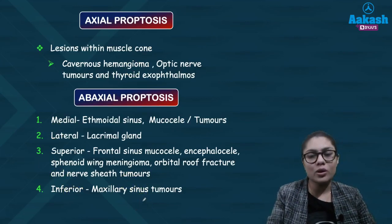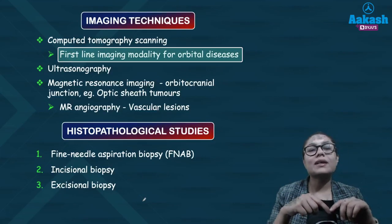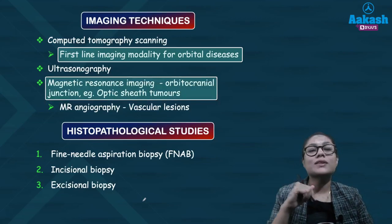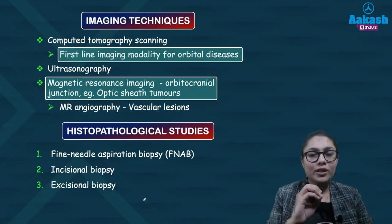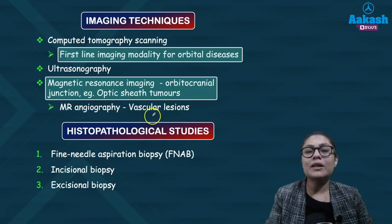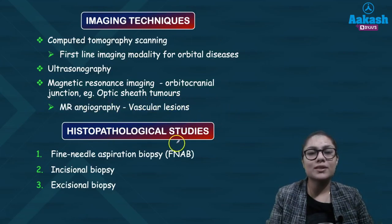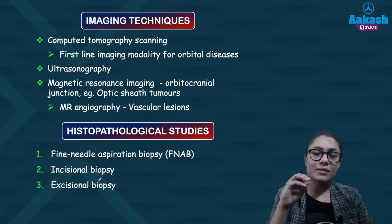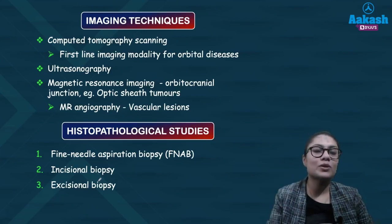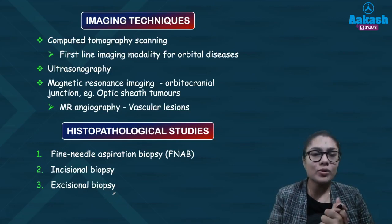The first-line imaging modality for orbital pathology is CT scan. MRI is the modality of choice for orbitocranial junctional involvement or optic nerve involvement. For vascular lesions, MR angiography is the technique of choice. For masses, confirmatory diagnosis is by histopathological studies — either fine needle aspiration biopsy, incisional biopsy where a small chunk of the opened tumor is taken, or excisional biopsy where the entire encapsulated mass is removed for histopathological examination.